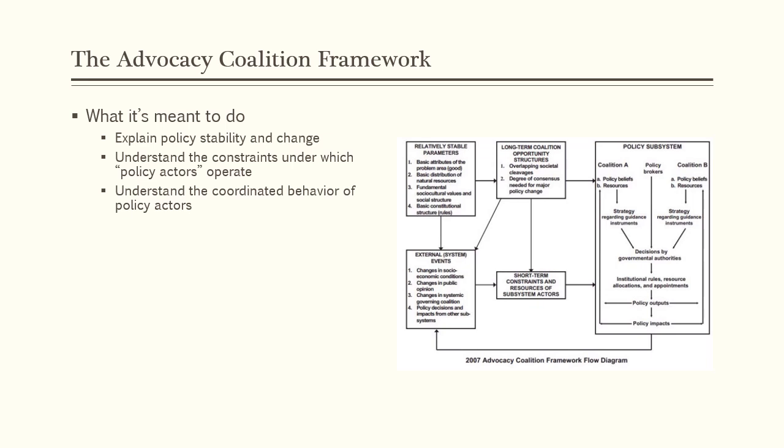Second, the ACF tries to account for the role of both people and structures in the policy process. In other words, policy results from the actions and choices of people who are active in a particular policy area. But the actions and decisions of these people are constrained and guided by factors that are outside of their individual control — things like the rules of government institutions, or broadly held social and cultural values about what types of government action are considered appropriate.